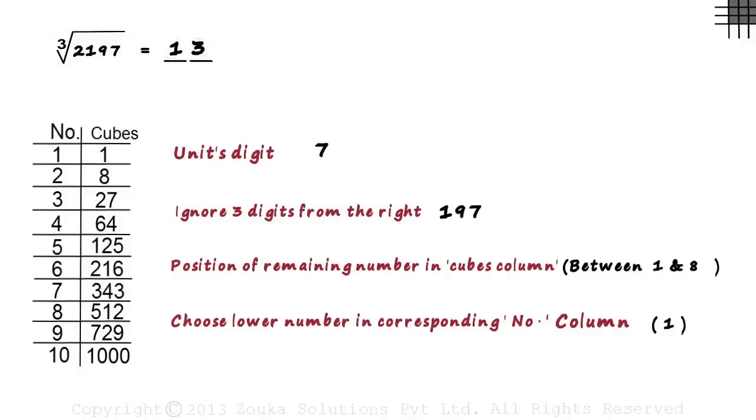Remember, we always choose numbers from the first column, which is the numbers column to write the digits of our answer. 3 was chosen from here and 1 was chosen from here.